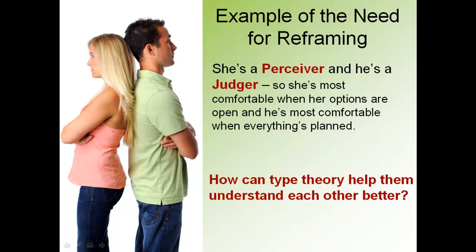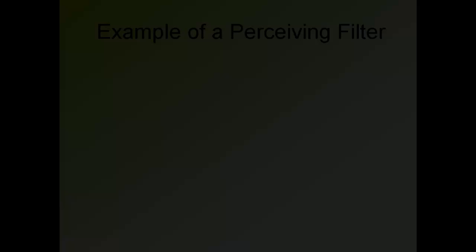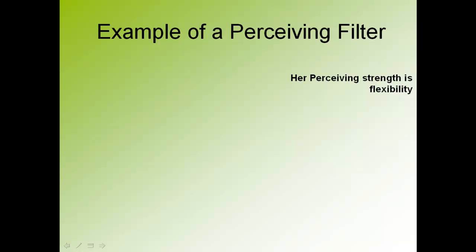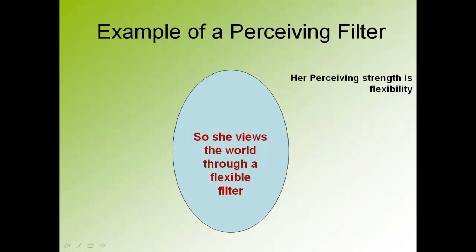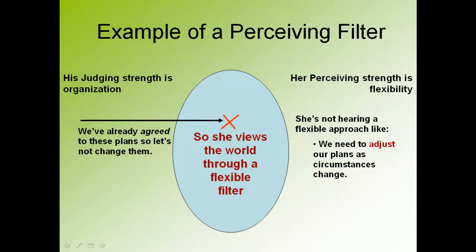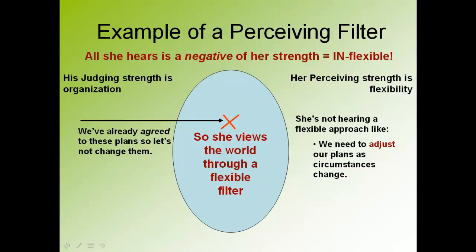Let's take a look at the problem in terms of how they see the world and what filters they use. Her perceiving strength is flexibility, so she views the world through a flexible filter. His judging strength is organization, so as an organized type of guy, he would likely say something like: 'We've already agreed to these plans, so let's not change them.' When his organizing statement hits her flexible filter, it gets blocked. She doesn't hear a flexible approach like 'we need to adjust our plans as circumstances change' — all she hears is a negative of her strength: inflexible. And all he hears is a negative of his strength: disorganized.